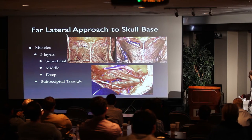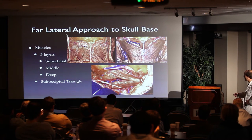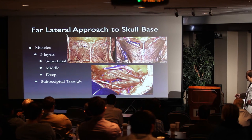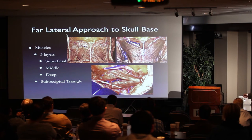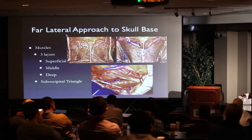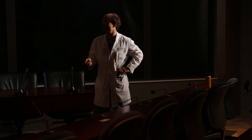The suboccipital triangle: the superior oblique goes from the mastoid tip. The rectus capitis posterior minor runs to the tubercle of C1, the superior oblique from the transverse process of C2, and the inferior oblique from the C1 tubercle to the spinous process of C2. Posterior major goes from C2 to the subocciput, and minor from C1 to the subocciput.